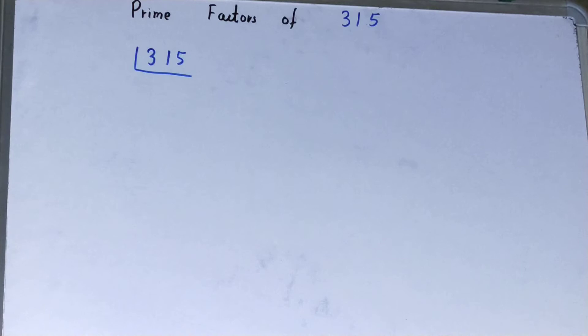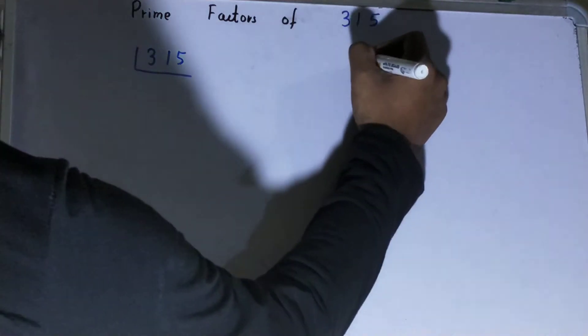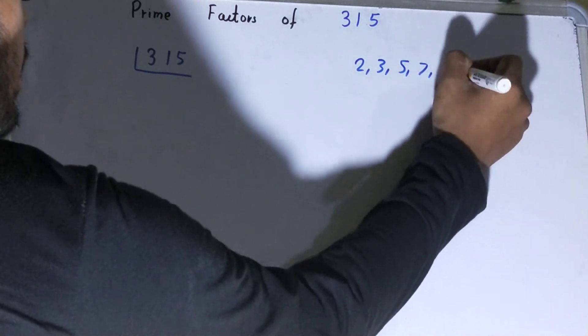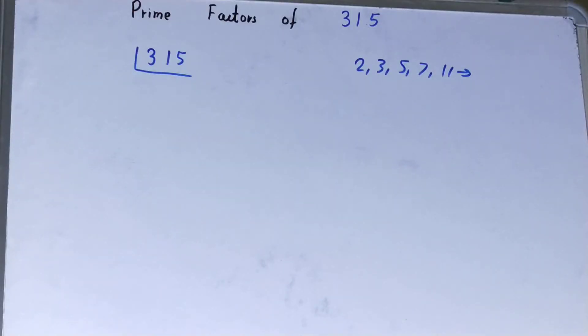Before solving this, you must have an idea about what prime numbers are. Prime numbers are numbers that are divisible by one and themselves only, like 2, 3, 5, 7, 11, and so on.